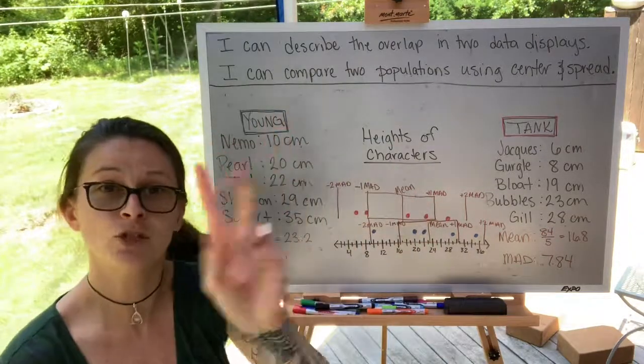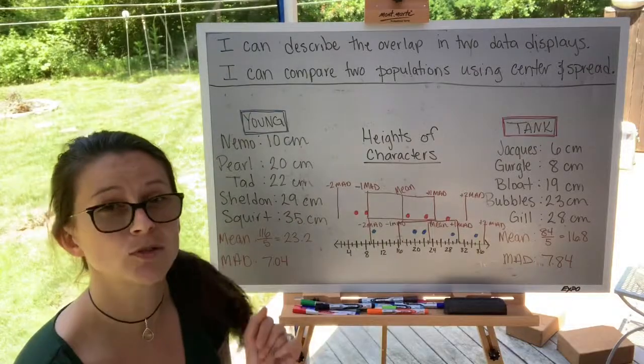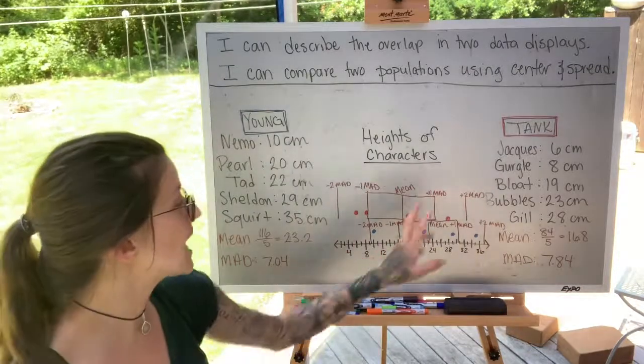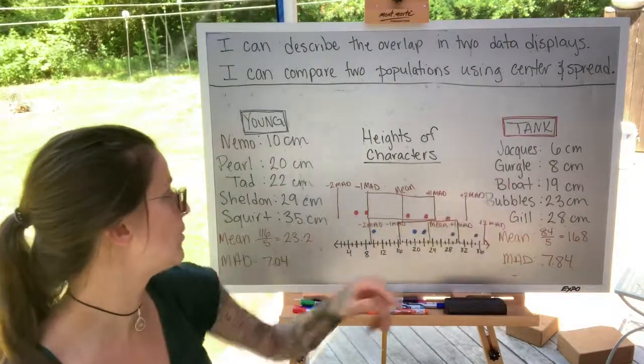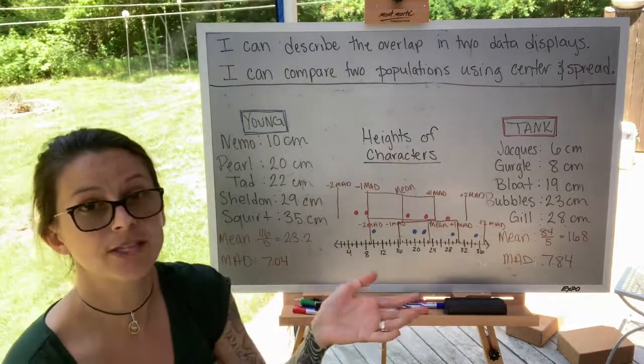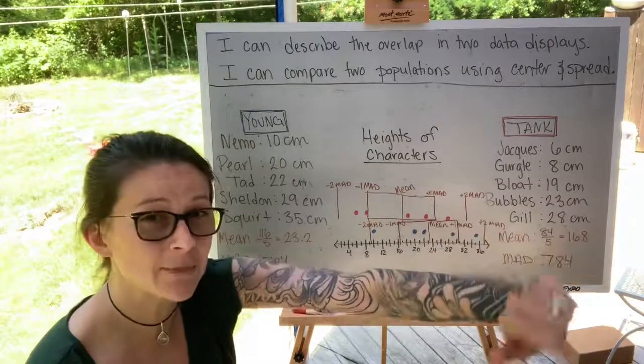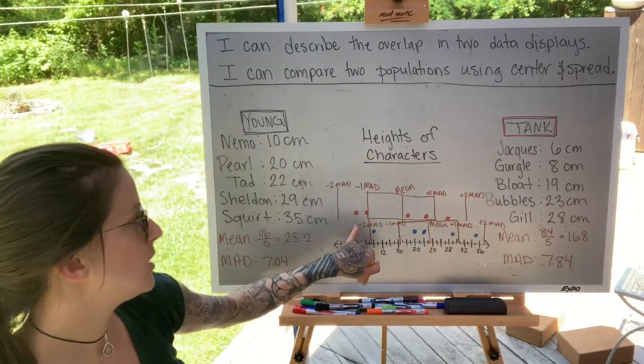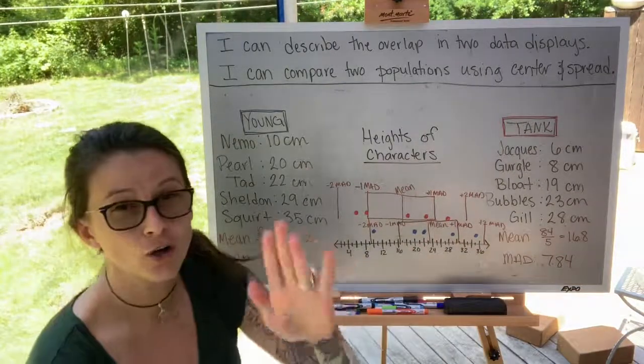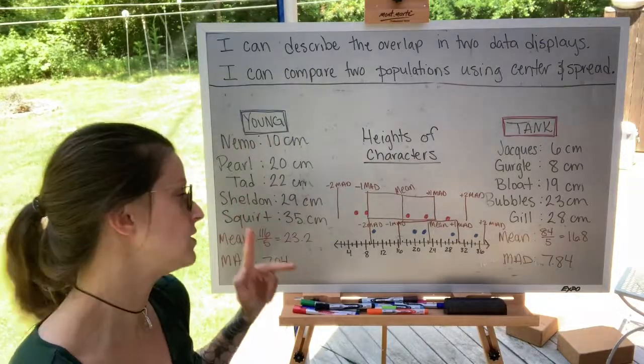In this case, we only have two characters that fall within one mean absolute deviation of the mean. So in this case, we only have Bloat and Bubbles that are considered typical size of the tank characters. Gil falls within two mean absolute deviations of the mean, and Jacques and Gurgle are, on the other side, two mean absolute deviations from the mean.